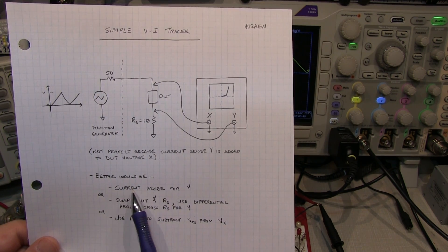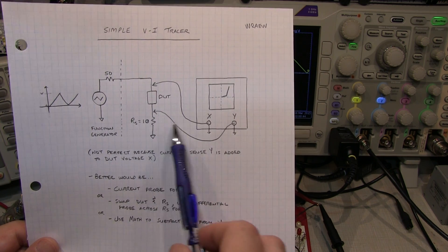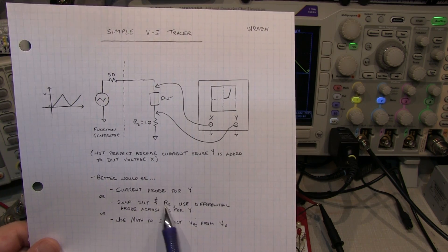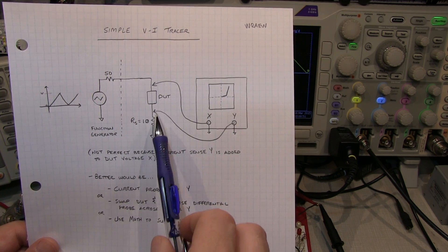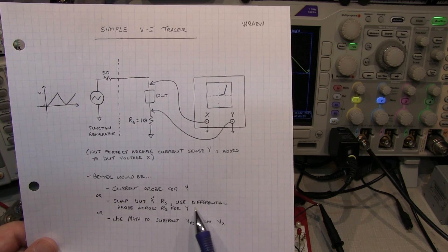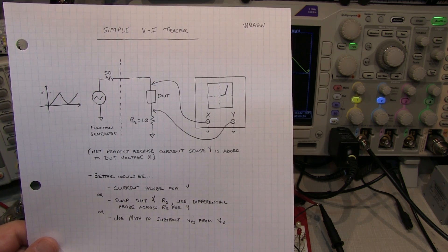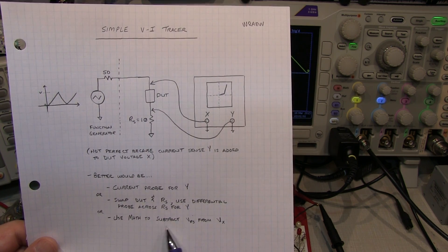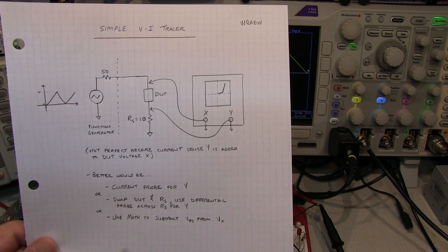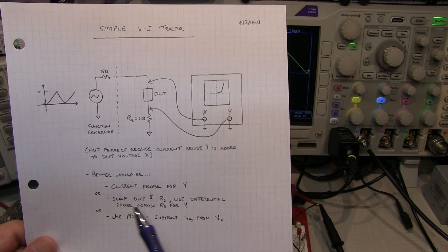A better approach would be to use a current probe rather than a sense resistor here to measure the current, or if you swap the DUT and current sense resistor locations and then probe across the current sense resistor with a differential probe, then you avoid that problem of having these voltages sum together. Or you could use math to subtract the current sense voltage from the DUT voltage in this configuration if your scope allows you to do XY with a math channel.